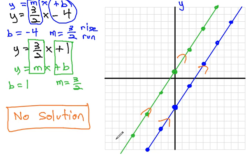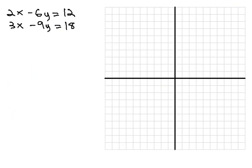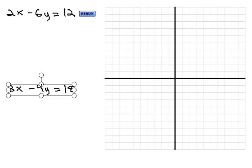Let's take a look at another special case that might be even different than this. In this problem, we have 2x minus 6y equals 12 and 3x minus 9y equals 18. As you can see, they're not ready to graph yet because they're not in intercept form. So let's do that.